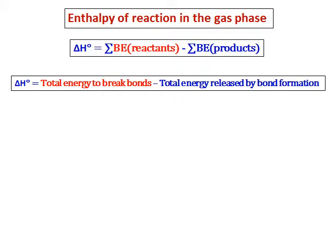And what I mean by that is delta H0 equals total energy to break the bonds minus total energy released when a bond is formed.